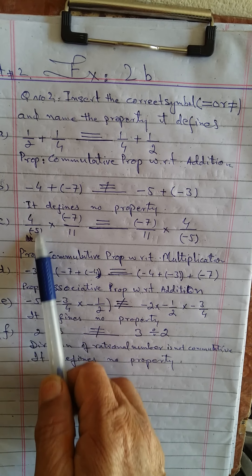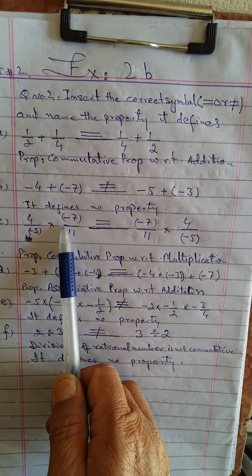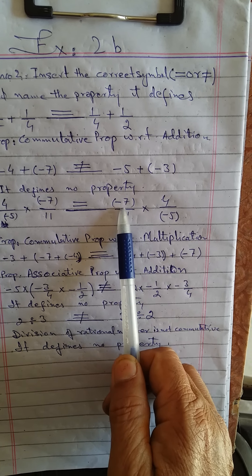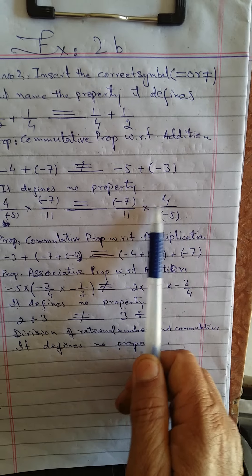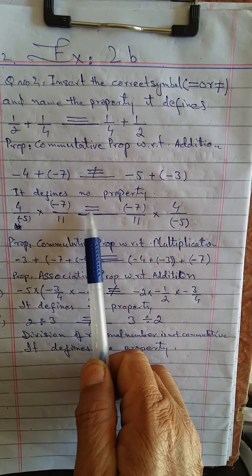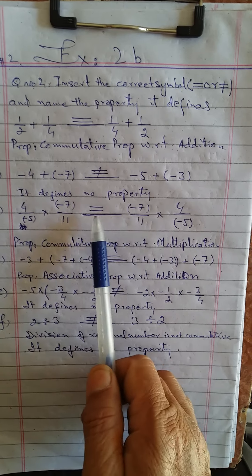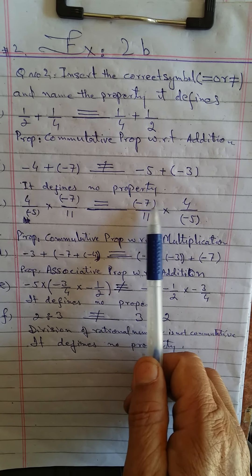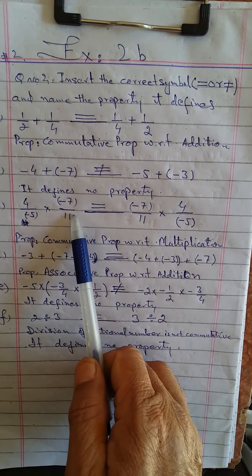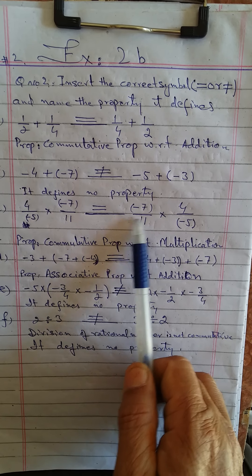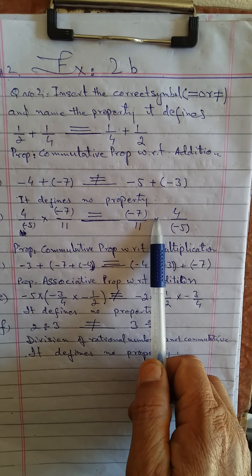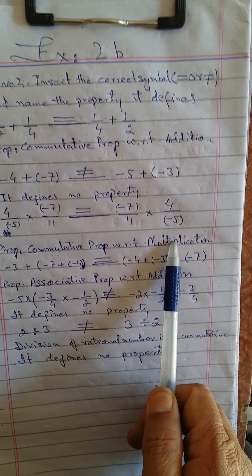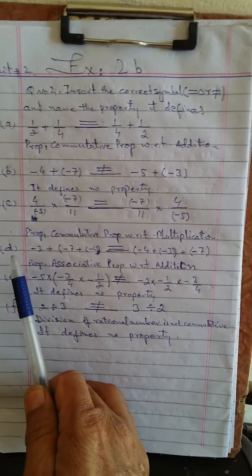Part number C: four over minus five, multiply minus seven over eleven, blank, minus seven over eleven multiply four over minus five. An equality sign will come here because the positions have been swapped — the first number has been placed second and the second number placed first, with a multiply sign between both. So both answers will be the same, and the property used is the commutative property with respect to multiplication.